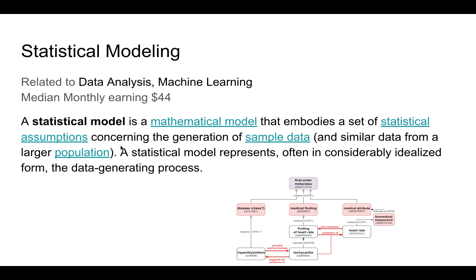Next comes statistical modeling, which is related to data analysis and machine learning. Its median monthly earning is $44. A statistical model is a mathematical model that embodies a set of statistical assumptions concerning the generation of sample data from a large population. It represents, often in a considerably idealized form, the general data-generating process. Not more than 10 courses are made on this niche topic.